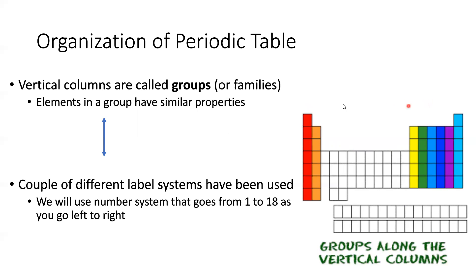If you do look at a different periodic table, sometimes you'll see A's and B's mixed in there, just because the groups that are currently colored are what are known as the main groups of the periodic table. Sometimes we just have 1, 2, 3, 4, 5, 6, 7, 8 — and sometimes they include an A or a B on there. The transition metals have a kind of weird set of properties, so sometimes you'll see 1, 2, 3A or 3B, 4A or 4B. But we're going to keep it simple and just have 1 through 18.